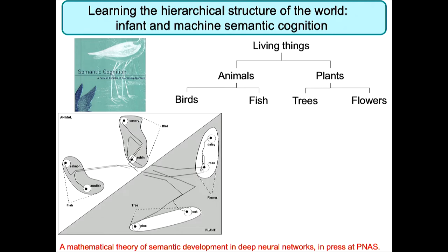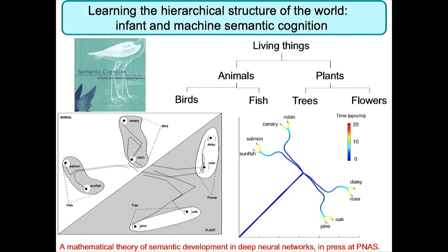This is astounding — why is a deep neural network behaving like an infant? We developed a mathematical theory to explain why this is happening in deep neural networks by discovering new exact solutions to their learning dynamics. This is a plot of the mathematical equations we found, and you can see that it recapitulates the much more complex neural network simulations. It provides conceptual insight into how hierarchical structure in the world gradually embeds itself into the synaptic weights of a neural network.